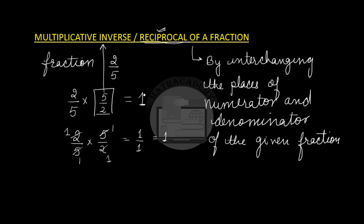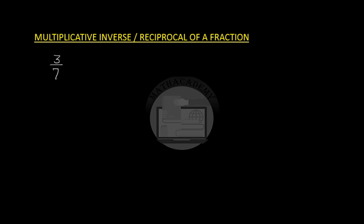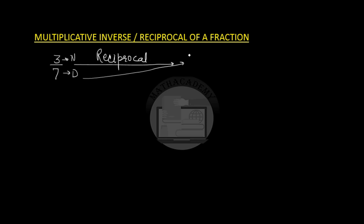Let us see some examples. If we have a fraction 3 over 7, to obtain the multiplicative inverse or reciprocal we have to swap the numerator and the denominator. Here 3 is our numerator and 7 is our denominator. So 7 will be swapped to the numerator and 3 will come in the denominator, and the reciprocal of 3 by 7 is 7 by 3.